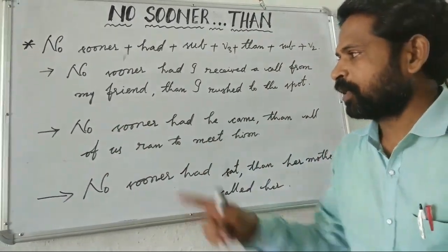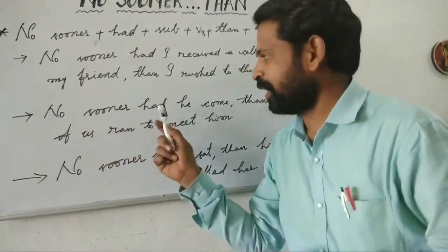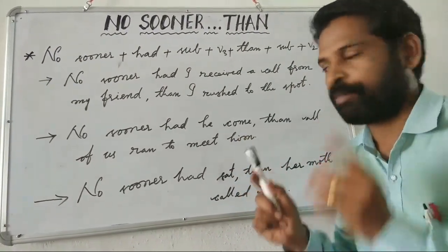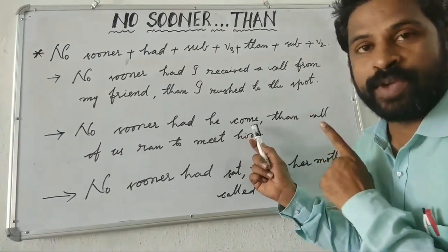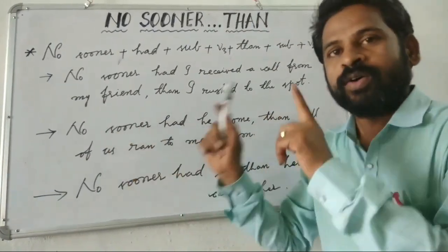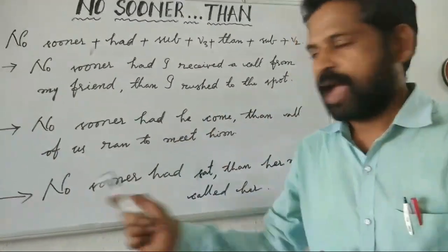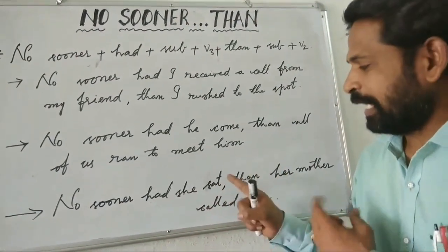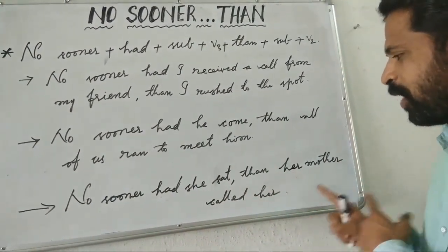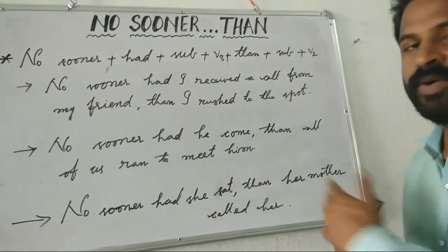Another example: no sooner had he come — had plus V3, where 'come' is the third form — then all of us ran to meet him. Another example: no sooner had she sat — 'sat' is the third form — then her mother called her — aame kuchundho ledo, wala amma garu pilcha.